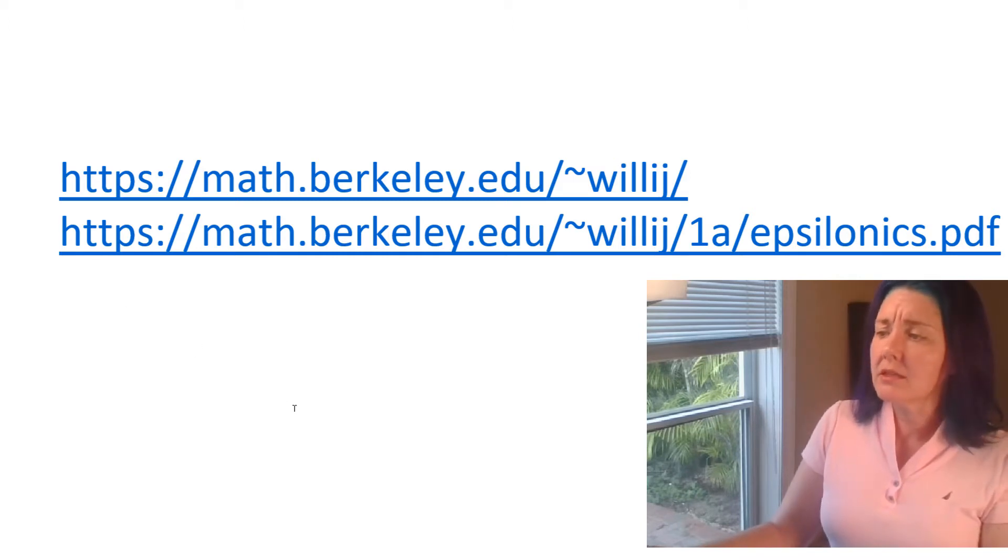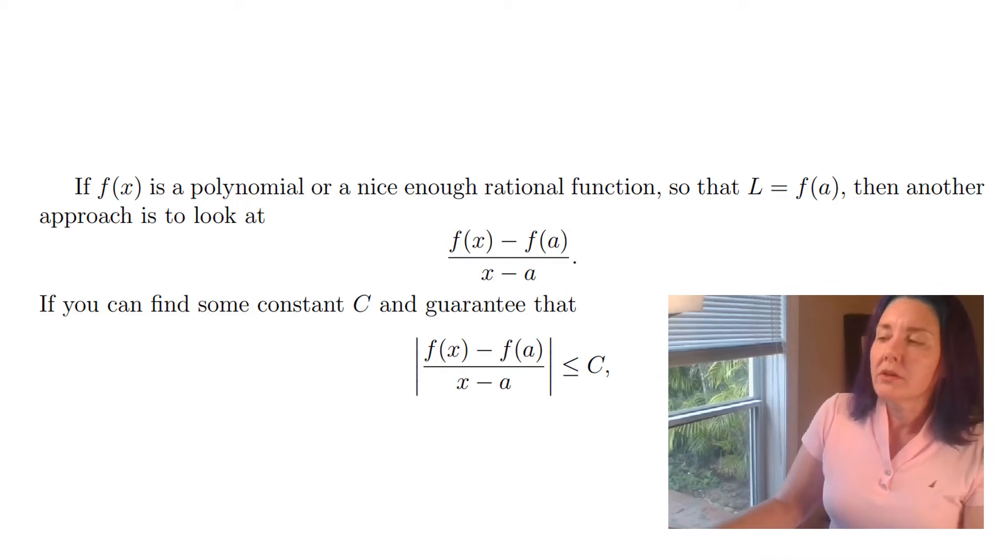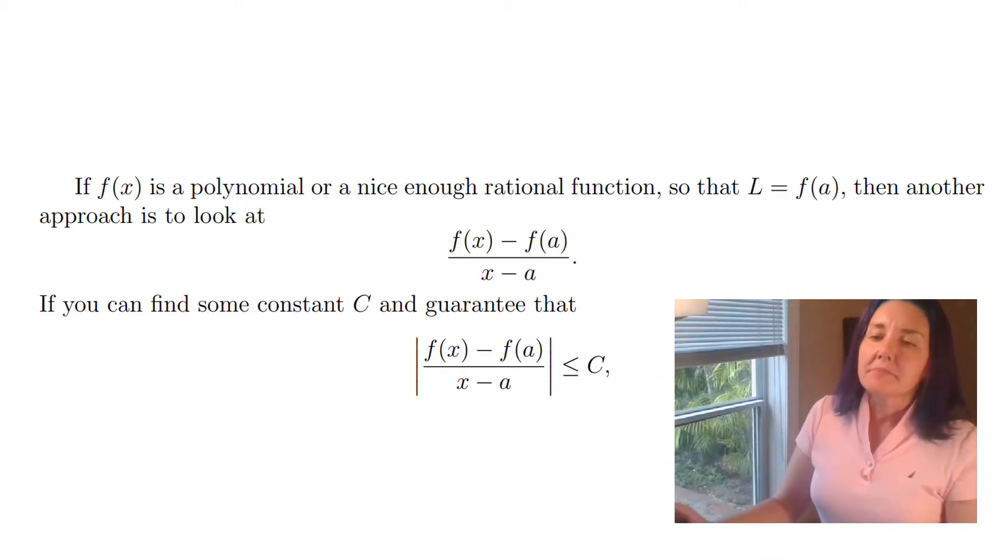Let's take a look at what he talks about in his Epsilon X PDF that he has posted there. Alright, so it says if f of X is either a polynomial function or a nice enough rational function, nice enough that if limit as X approaches a of the function is what you're talking about, you can plug in a to the function to find the limit.